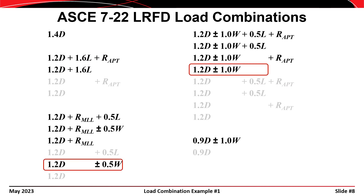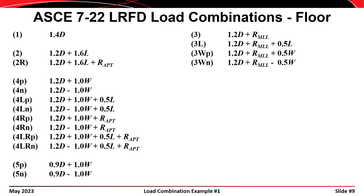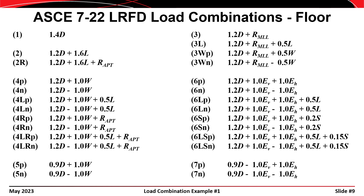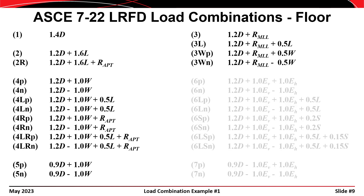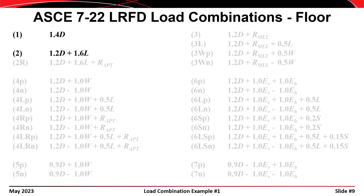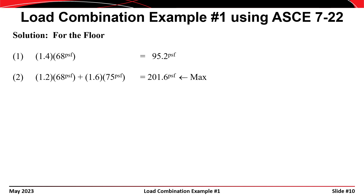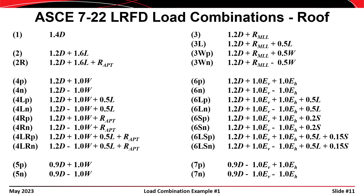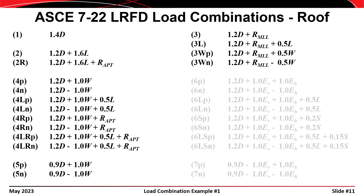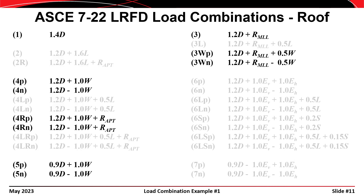When we consider load combinations including dead and wind loading, 1.2 times dead plus 1.0 times wind should govern. When we include earthquake combinations and account for reversible loads, we're left with 27 unique permutations. There are no earthquake loads in this example, and in the first part of the problem there are no wind or roof loads either, leaving only two permutations to consider. Substituting in values for dead load and live load, load combination number two governs with a floor loading of 202 pounds per square foot.